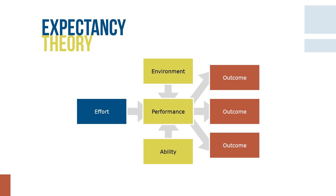This figure summarizes the basic expectancy model. The model's general components are effort — the result of motivated behavior — performance, and outcomes. Expectancy theory emphasizes the linkages among these elements, which are described in terms of expectancies, instrumentalities, and valences.